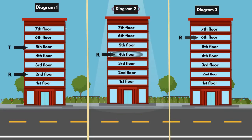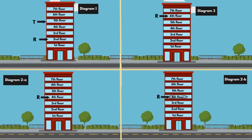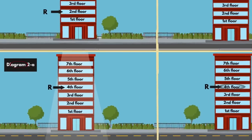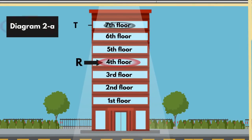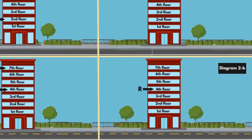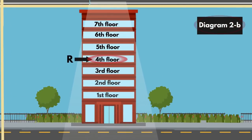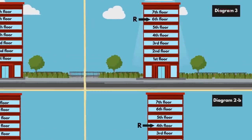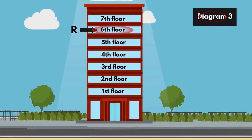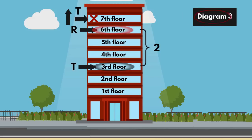In Diagram 2, R lives on the 4th floor, so we can place T on the 7th floor or 1st floor, giving two possible diagrams. In Diagram 2A, T is placed on the 7th floor; in Diagram 2B, T is placed on the 1st floor — both give only two persons between T and R. In Diagram 3, R lives on the 6th floor. We have only one floor above R, so we can't place T above R. Place T on the 3rd floor — only two persons live between T and R.